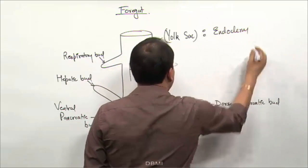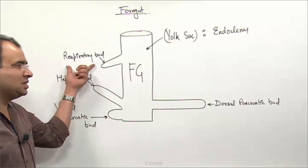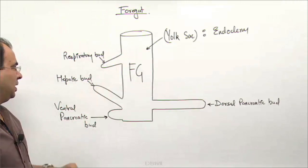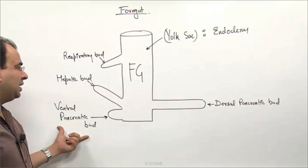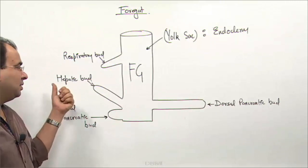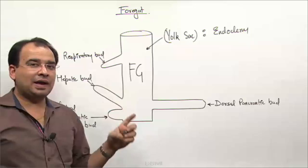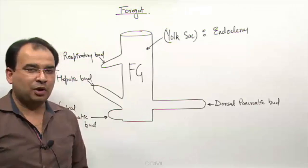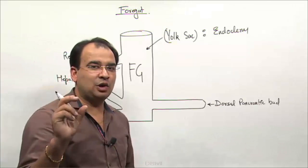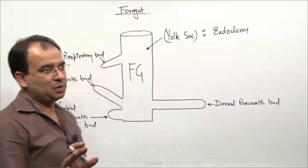All these derivatives are also endodermal. The respiratory system — the lower respiratory system — is endodermal. Pancreas is endodermal. Hepatic bud is endodermal. But for liver, I cannot say the entire liver is endodermal because we already talked about the source called septum transversum.